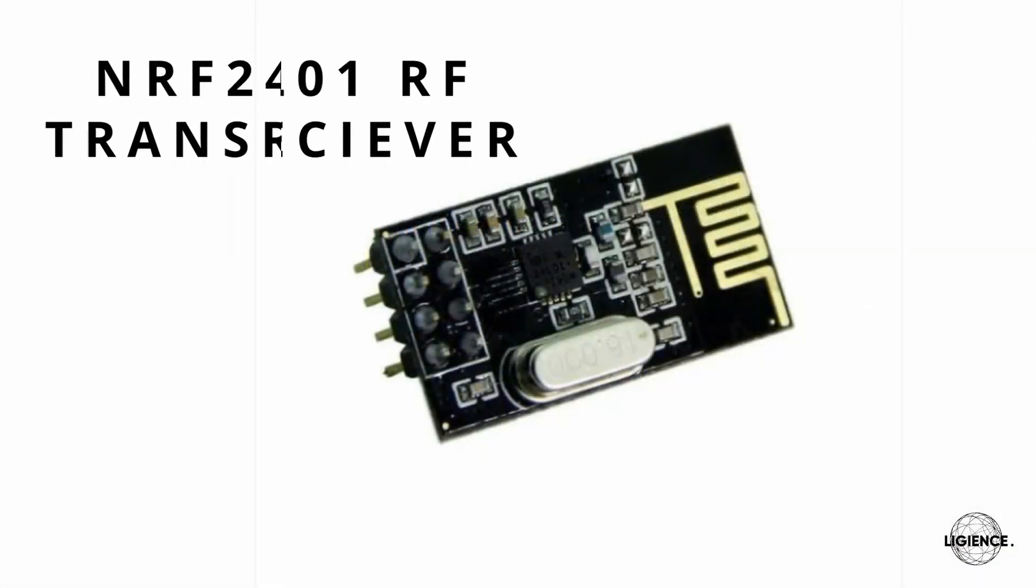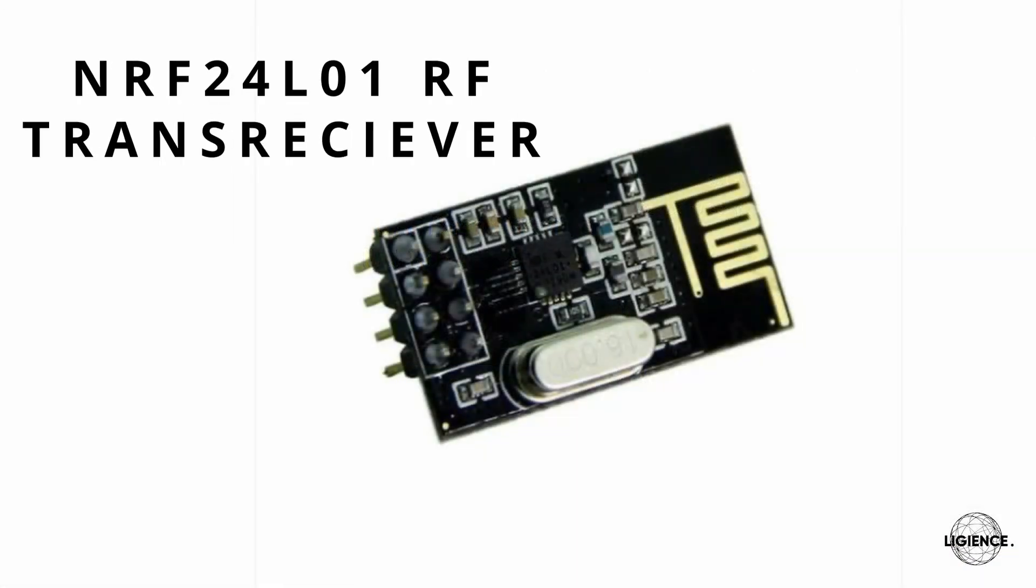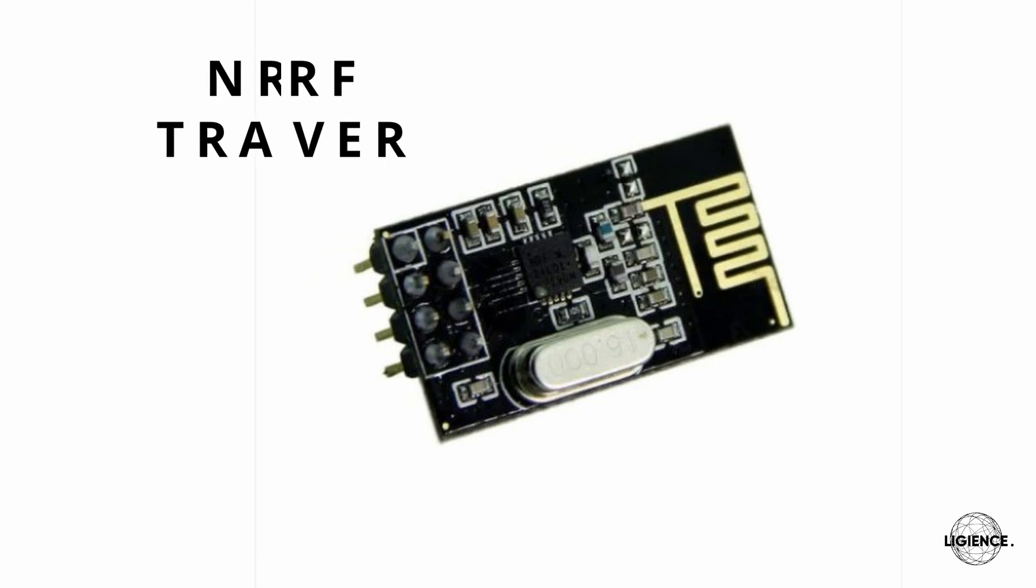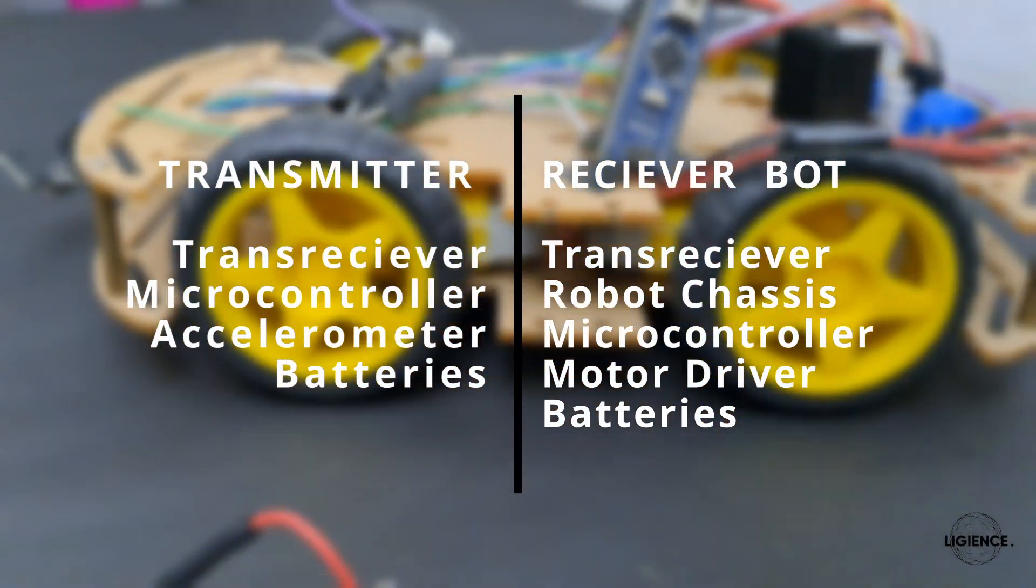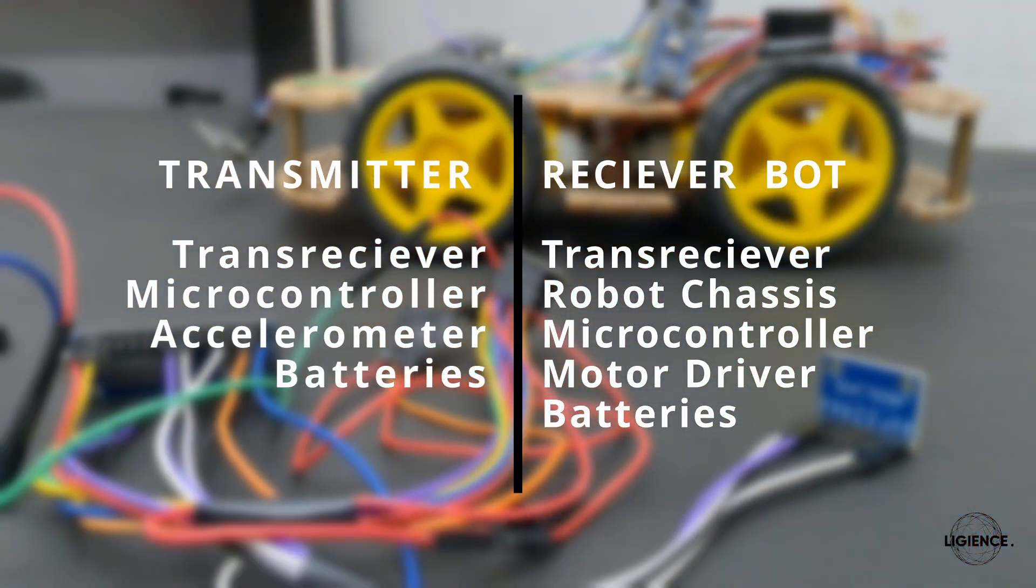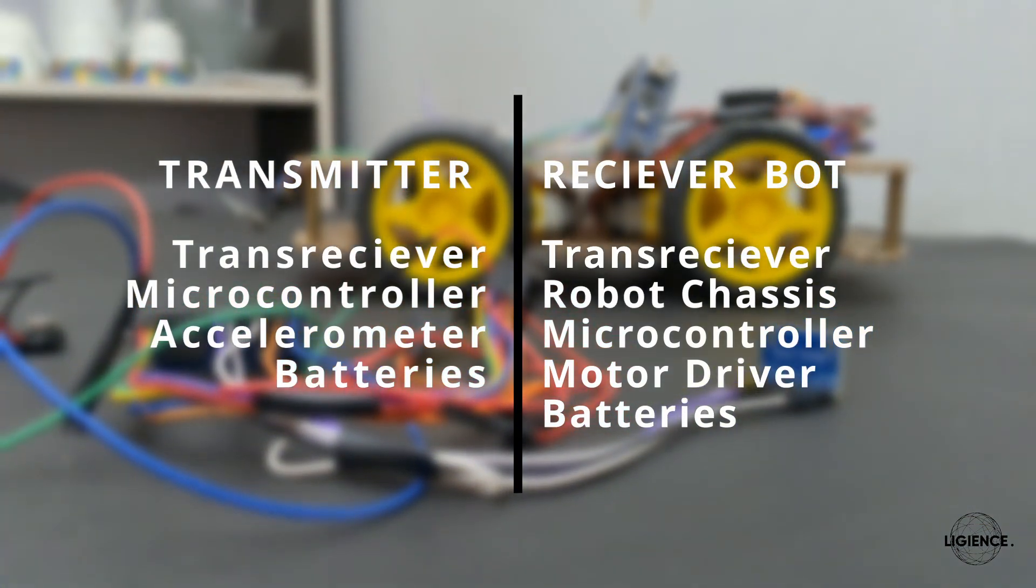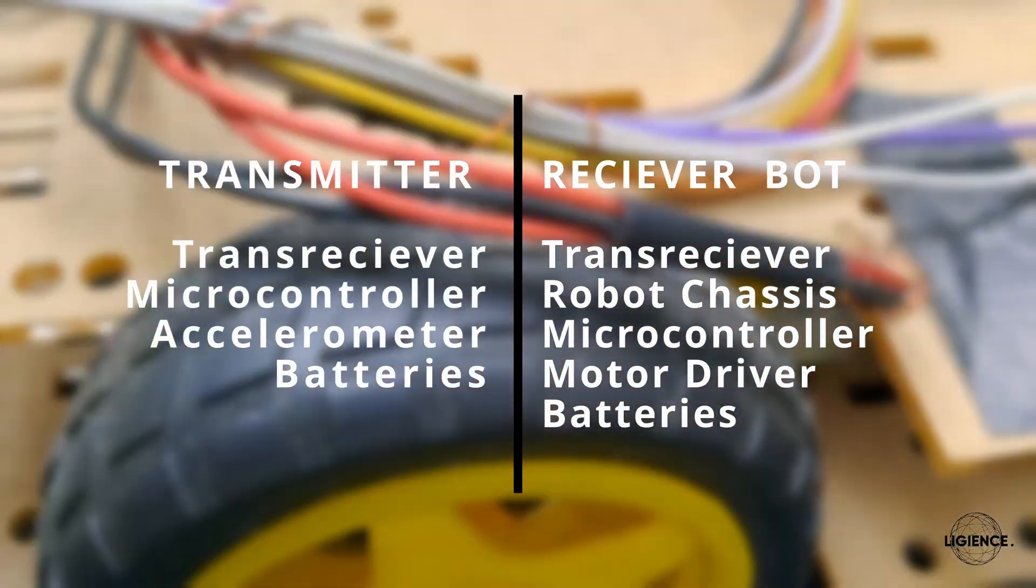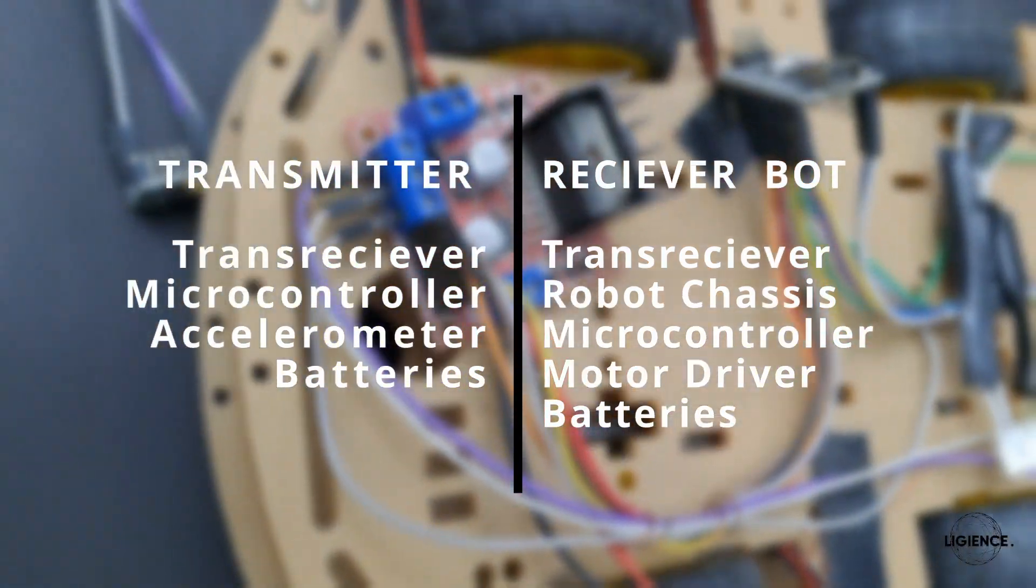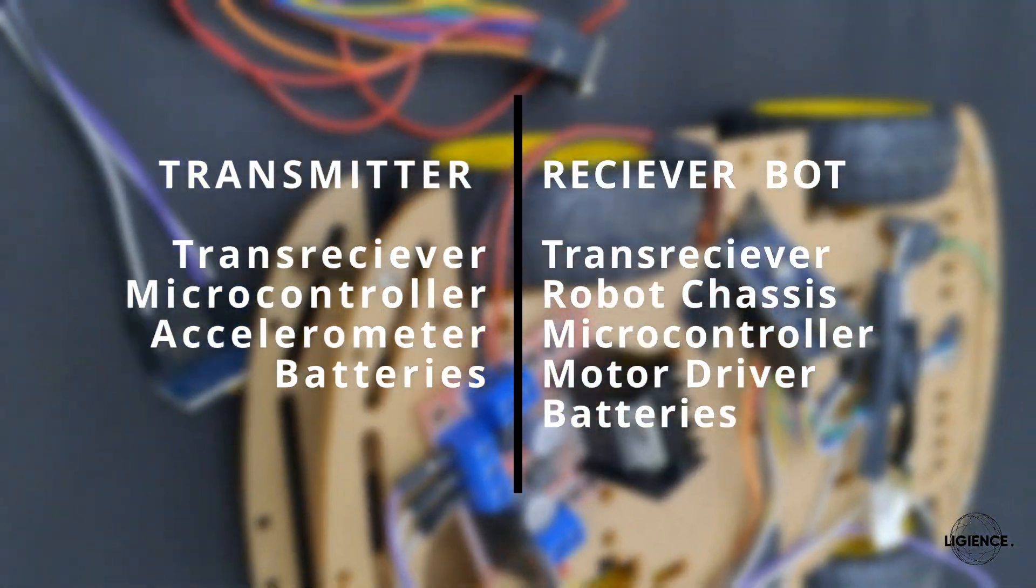The vehicle used an NRF24L01 RF module that could be programmed as a transmitter or receiver. For the transmitter I used one of the transceivers like a controller with an accelerometer and batteries, while for the vehicle or bot I used the robot chassis, motor driver, batteries, and that was it. I had the layout for the project.